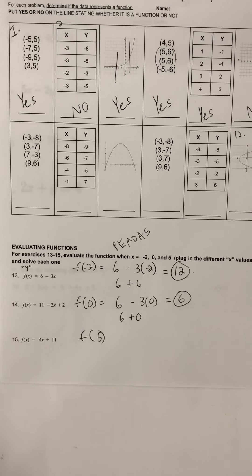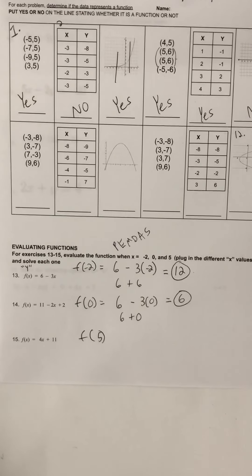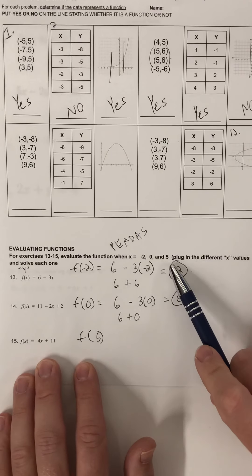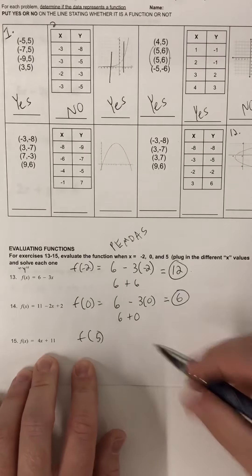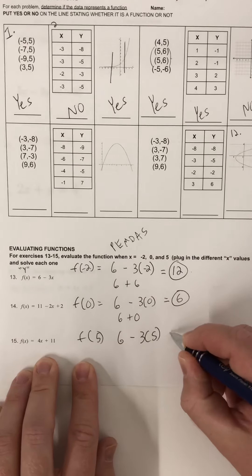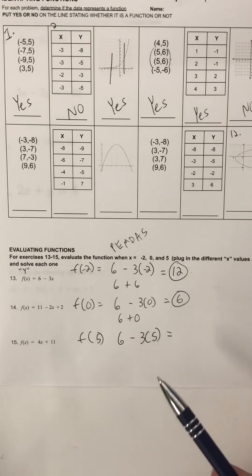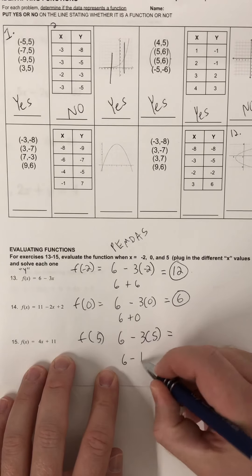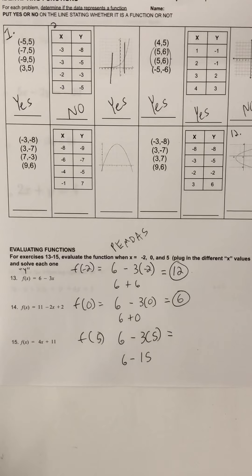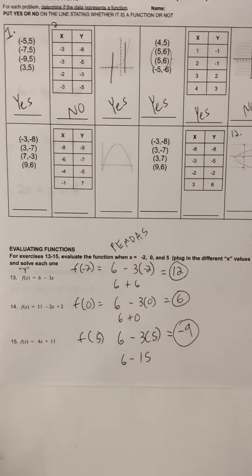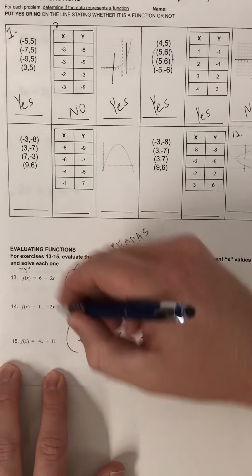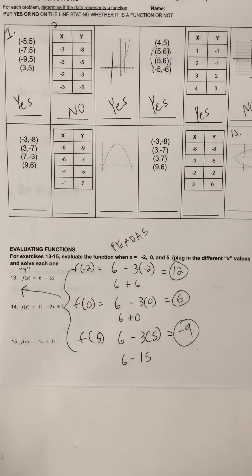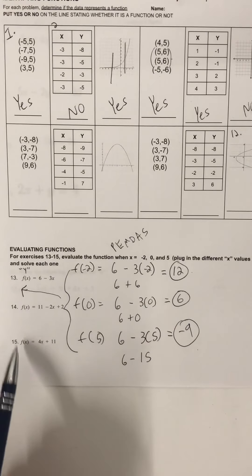Last input is five. f(5) — if I plug in five for x, we have 6 minus 3 times 5. Be aware that the rules of negative numbers still apply — negative three times five, negative times a positive is a negative. So we have 6 minus 15, which equals negative 9. This was number 13. When you do this assignment and take your test on Thursday, you'll do the same process for 14 and 15.